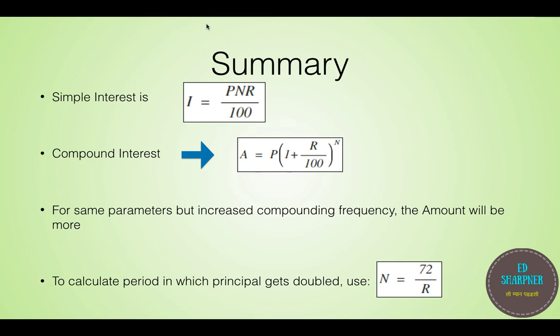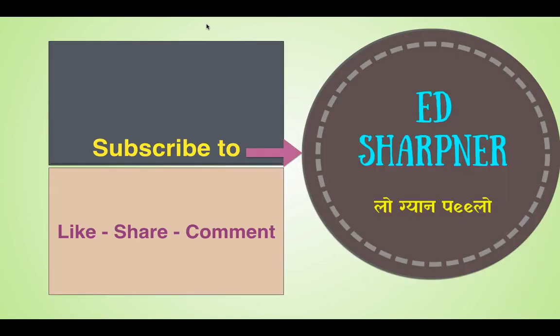Also, to calculate the period for which the principal gets doubled, just use N equals 72 divided by R. We shall be covering problems on compound and simple interest in another video if considerable response is received. Please let us know in the comment section if you want more problems as well, and also let us know on what topics you want in the next session of General Aptitude. Also, don't forget to like the video and subscribe to the channel. We will see you with another video soon. Tab tak ke liye, gyan pite rahiye.